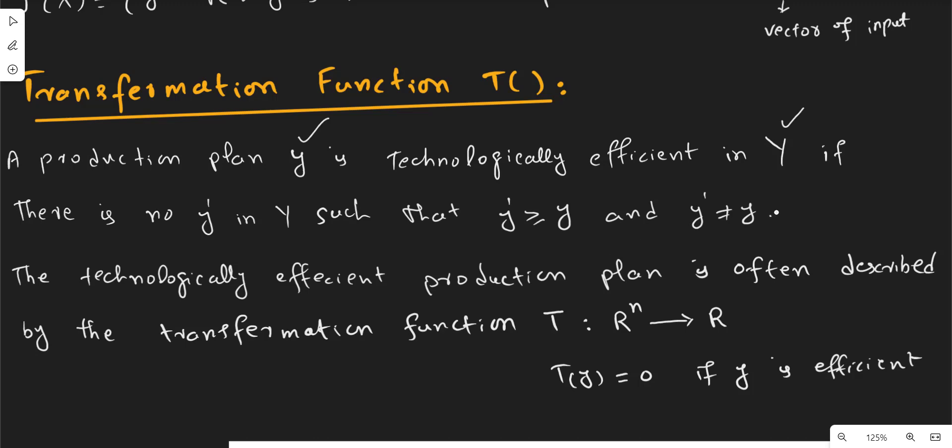This is called optimization or the transformation function. The transformation function is noted by T.